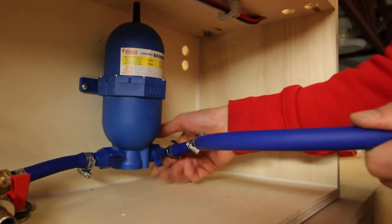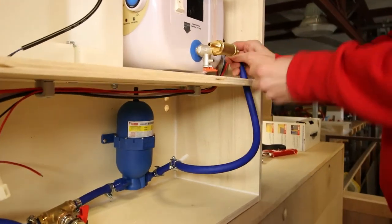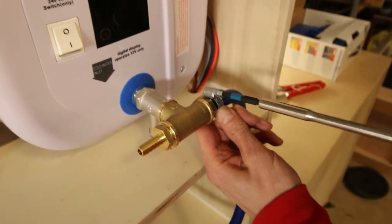The hose from the expansion tank is split. One side goes to the water heater and the other to the cold water inlet of the kitchen faucet.